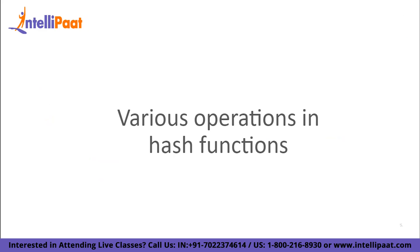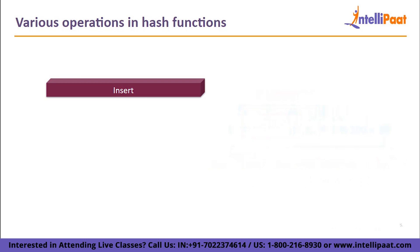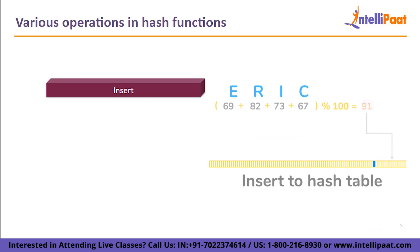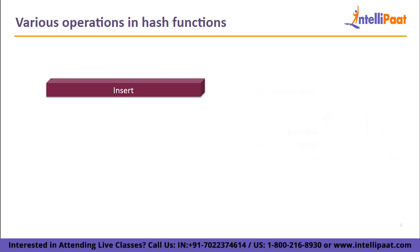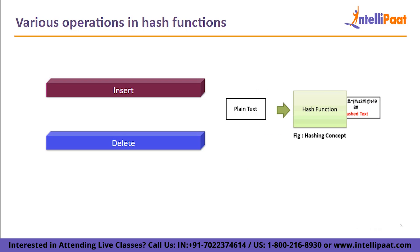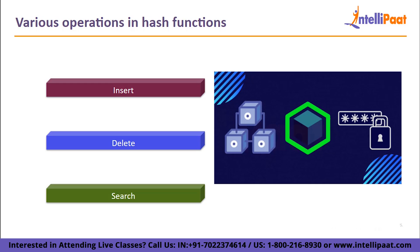What are the various operations in hash functions? Insert: the value stored in a hash table after the hash has been calculated is used as the key. Next, delete: it computes the hash and resets the value for that key that is stored in the hash table. Lastly, search: it determines the hash, locates, and returns the value kept for that key in the hash table.